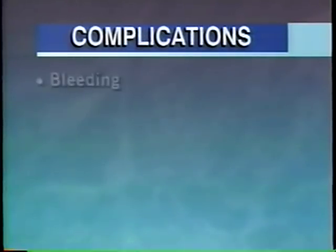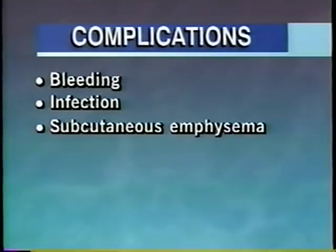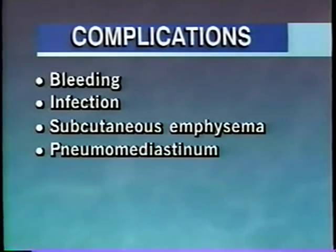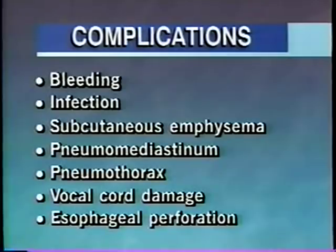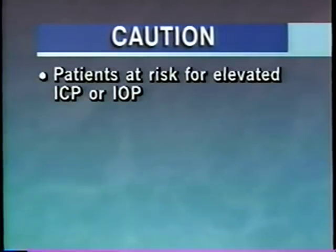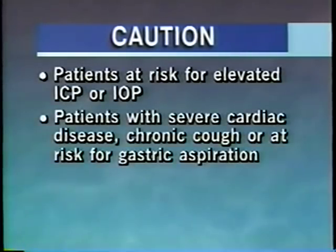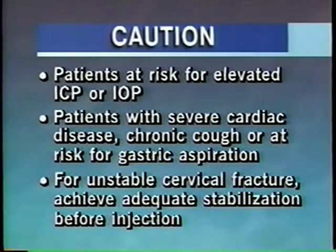Complications of translaryngeal injection are rare, but may include bleeding, infection, subcutaneous emphysema, pneumomediastinum, pneumothorax, vocal cord damage, and esophageal perforation. Translaryngeal injection should be used with extreme caution in patients at risk for elevated ICP or IOP, as well as patients with severe cardiac disease, chronic cough, or those at risk for gastric aspiration. In cases of unstable cervical fracture, it is important to achieve adequate stabilization prior to injection.